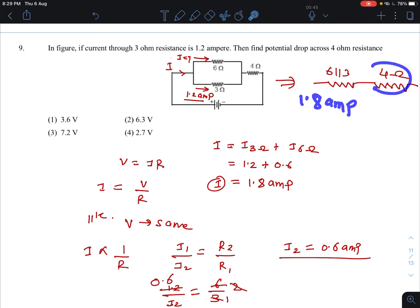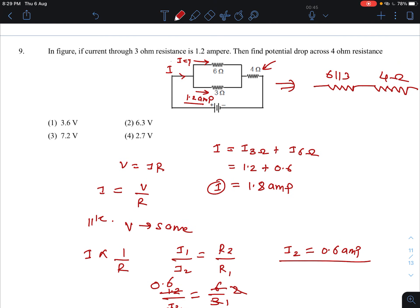1.8 ampere is the current here. So V equals IR.